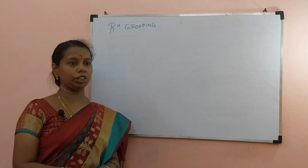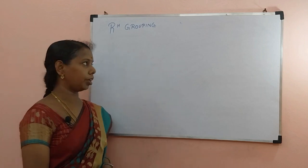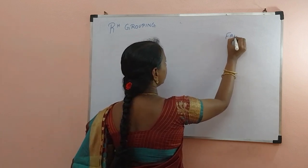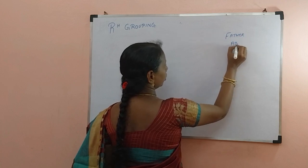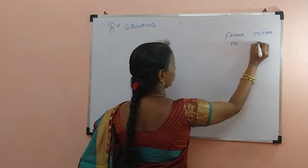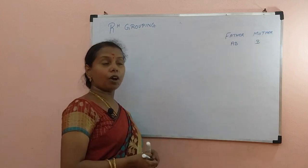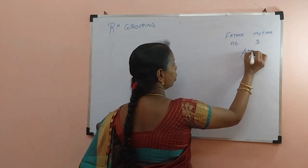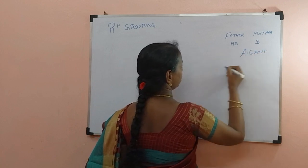Welcome to KL Biology. In this video we are going to discuss RH grouping. Before that, in the last video we discussed the father having blood group AB and mother having blood group B. The blood group of the progeny that indicates the father is heterozygous is of course A blood group — many of you answered correctly. So A group indicates that the father is heterozygous.